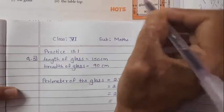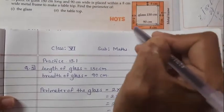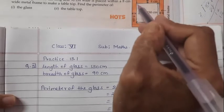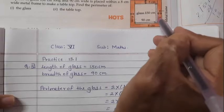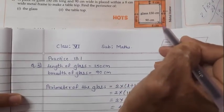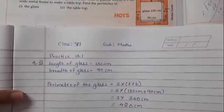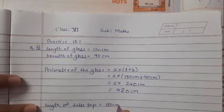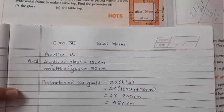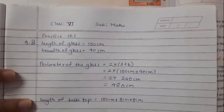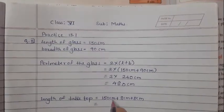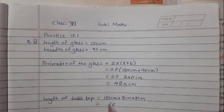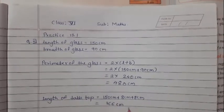The glass length is 150 cm. We add 8 cm on one side and 8 cm on the other side: 150 plus 8 plus 8. So 8 plus 8 is 16, carry 1; 5 plus 1 is 6, then 1. So the length of the table top is 166 cm.